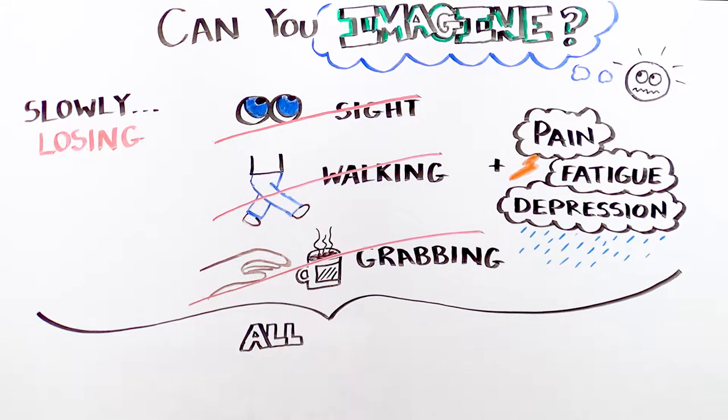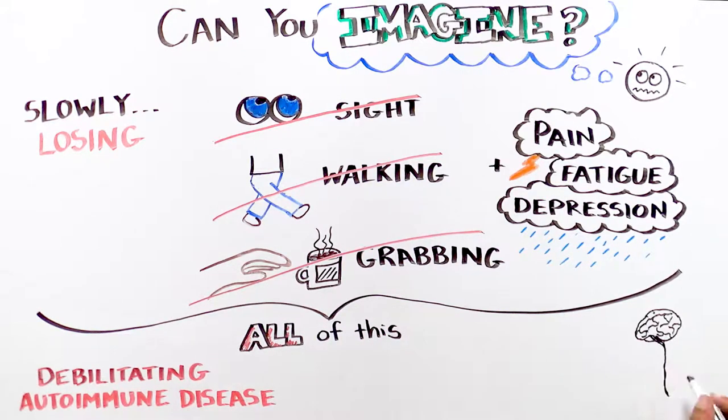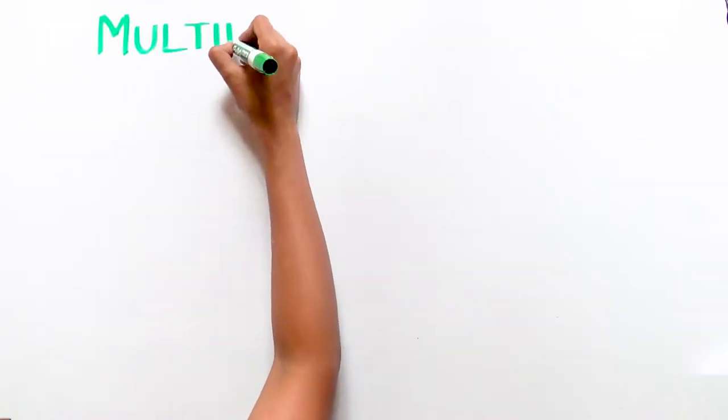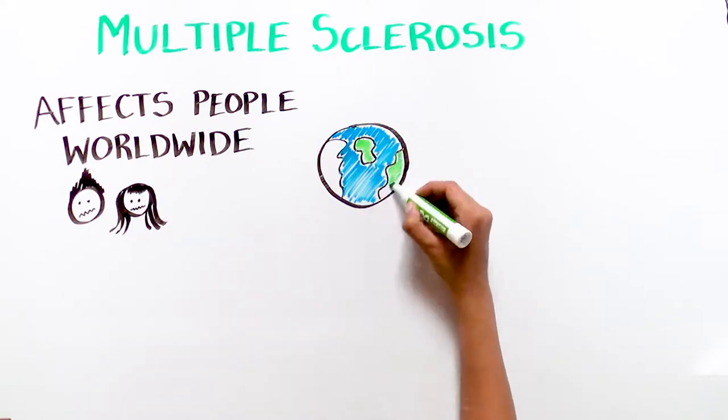These broad symptoms impact the quality of life of patients with a debilitating autoimmune disease that affects the brain and spinal cord called multiple sclerosis, MS. MS affects many people worldwide, including young adults.